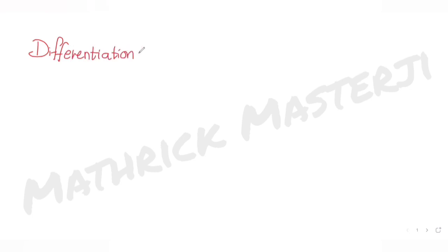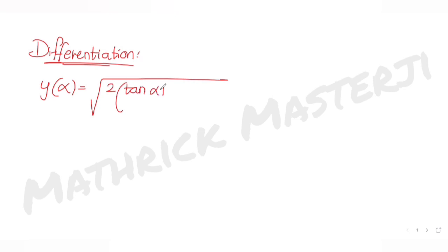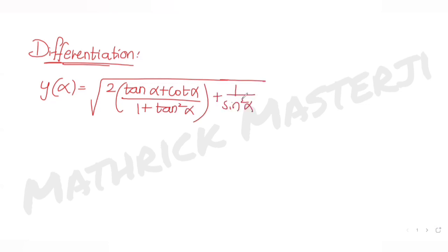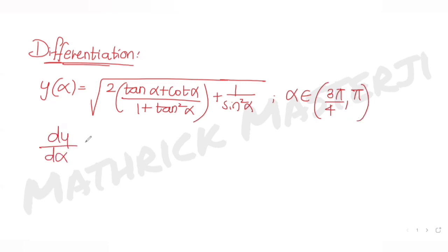Today's question is from the topic of differentiation. The question tells us that y(α) equals the square root of 2 times (tan α + cot α) divided by (1 + tan²α), plus 1 over sin²α. Alpha belongs to the interval from 3π/4 to π, and we have been asked to find the derivative of this function with respect to α at the value α = 5π/6.